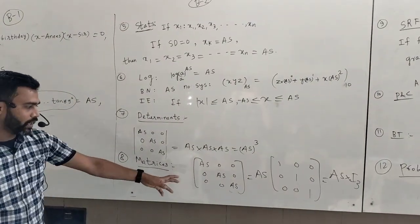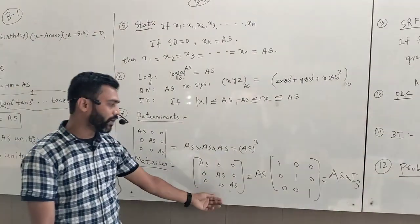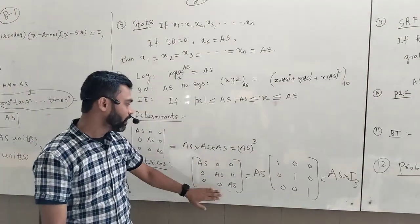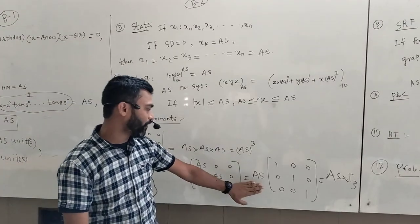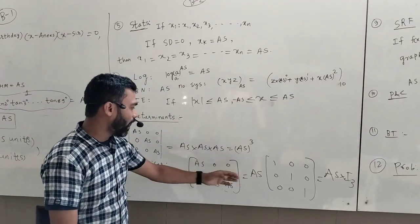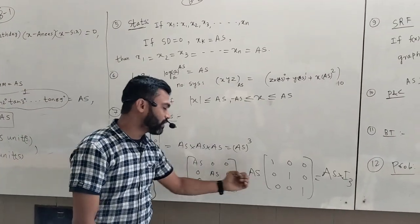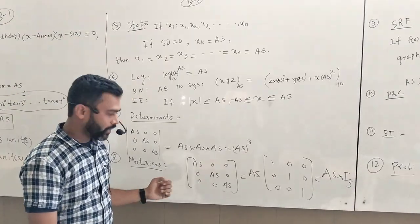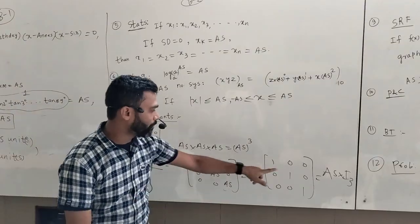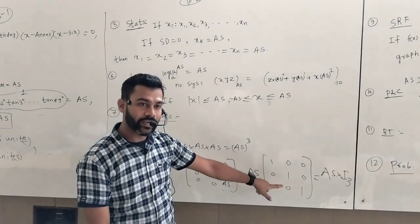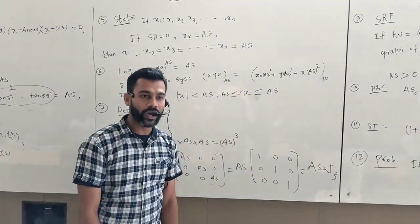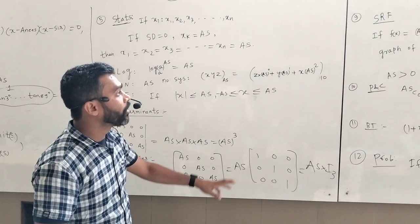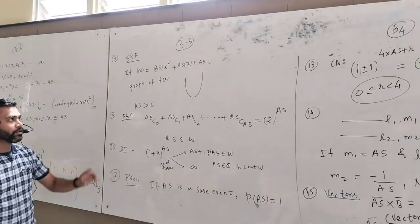Matrices: similarly, again a diagonal matrix. We can simplify it by taking Anisar outside, so it becomes an identity matrix of order 3, that is Anisar × I₃.